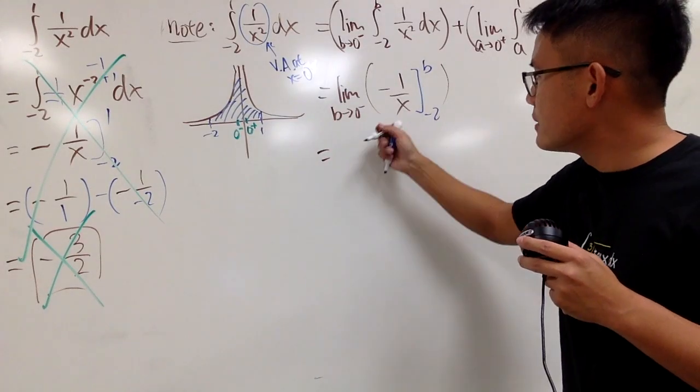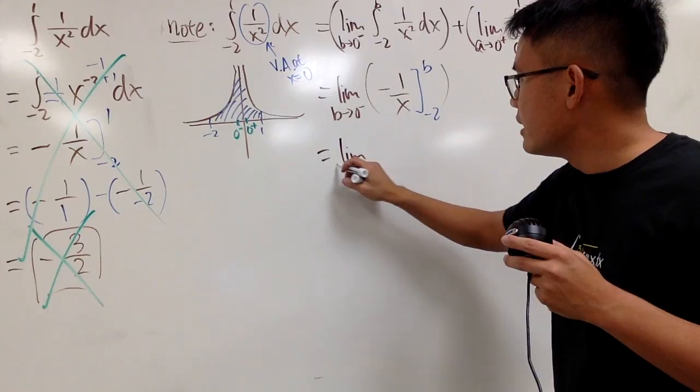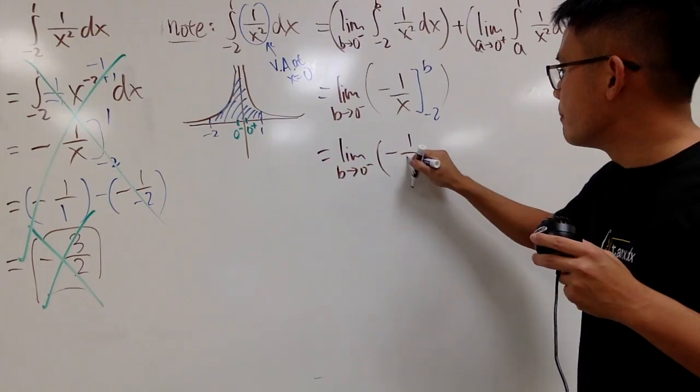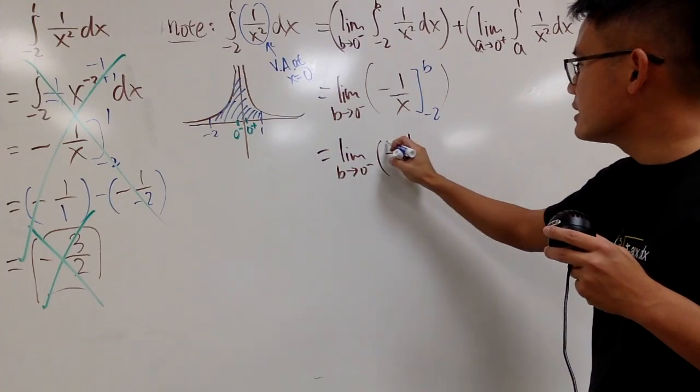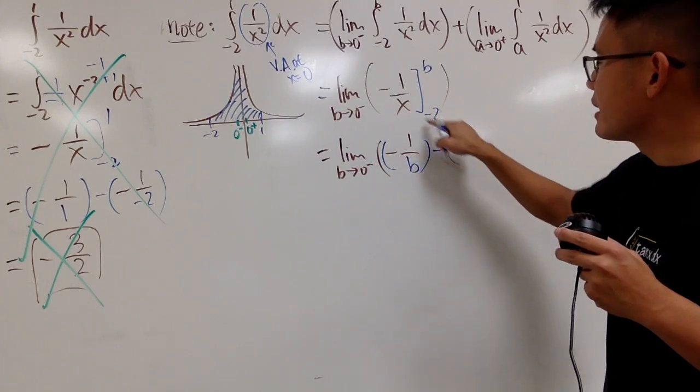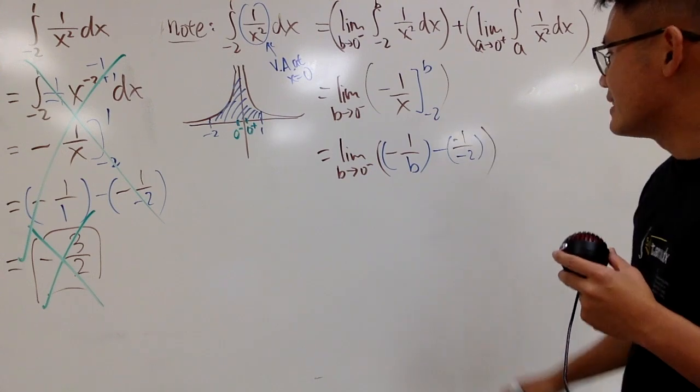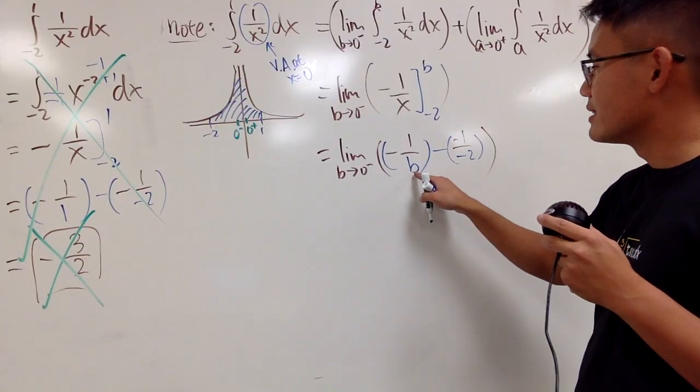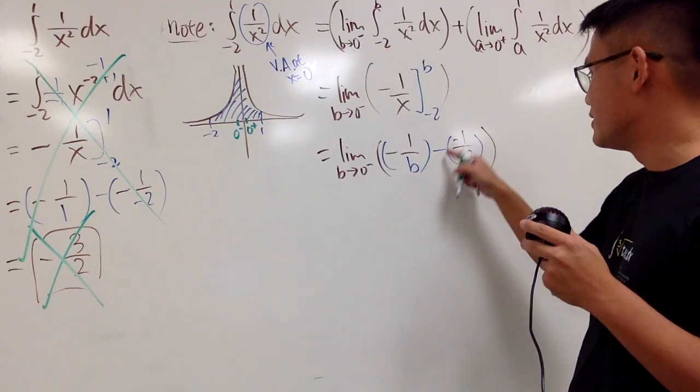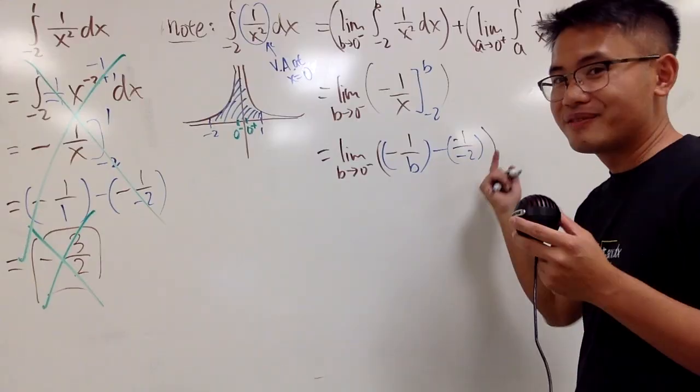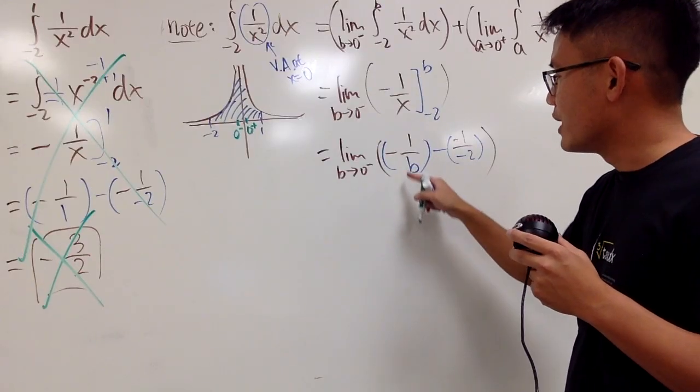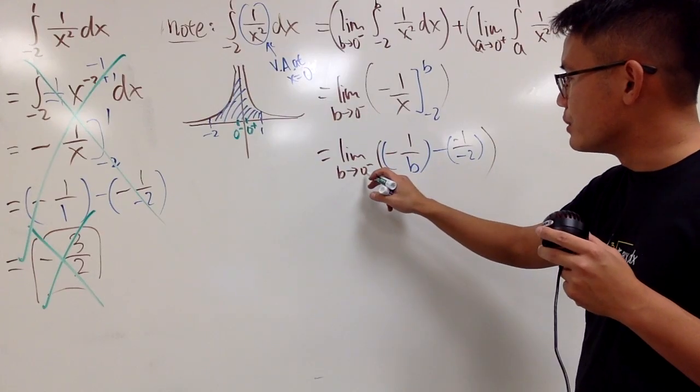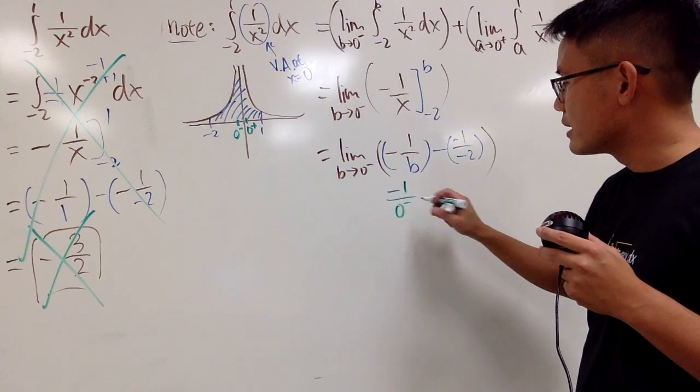Anyway, we're plugging B. So, we are taking the limit as B approach 0 minus. And, we have negative 1 over B. And, this is the first part. We have to minus plug in negative 2 right here. Alright. So, here is the fun part. I will use green for this. Why not? I will plug in 0 minus right here for the B. Because, this is just minus positive 1 half. That's finite. Let's see what we get from here. We have negative. And, on the top is 1. And then, when you put 0 minus in here, you get 0 minus like this.